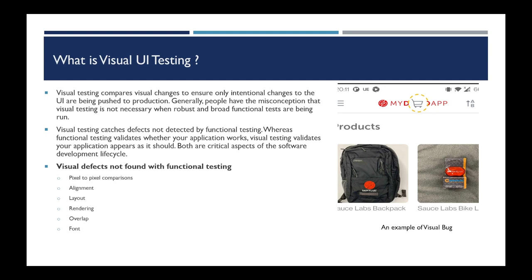Visual UI testing compares the visual changes to ensure only the intentional changes to the UI are being pushed to production. I have seen people have this misconception that visual testing is not necessary when robust and broad functional tests are being carried out, but this is not true. Visual testing catches defects which are not easily detected by functional testing, whereas functional testing validates whether your application works as expected.